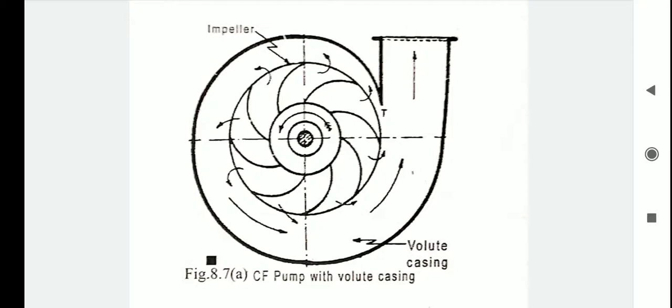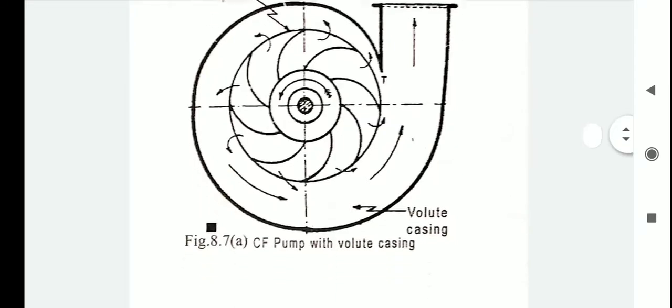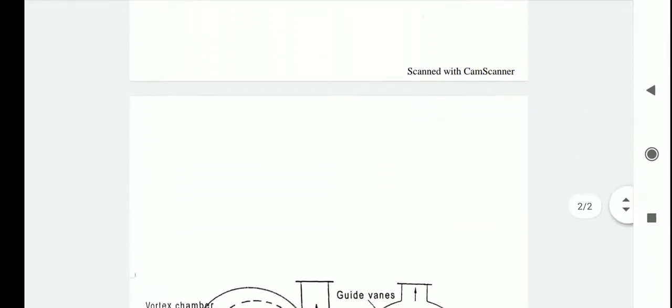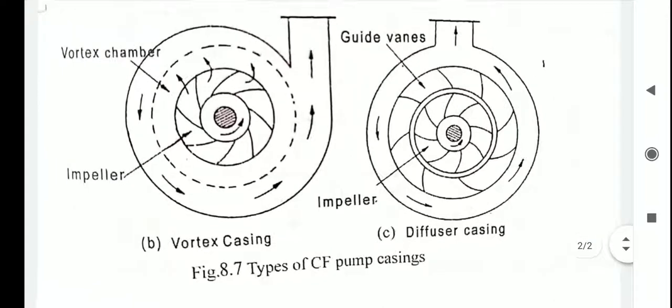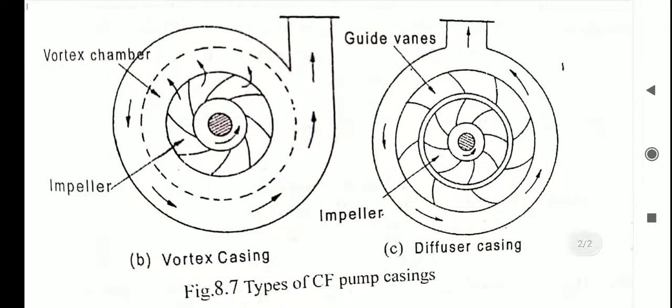Next, we move on to vortex casing. In vortex type casing, a circular chamber is provided between the casing and the impeller. The vortex casing reduces the formation of eddies to a considerable extent.